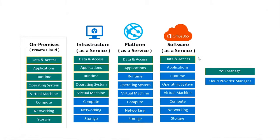What is Infrastructure as a Service, Platform as a Service, Software as a Service? With on-premises, you keep all your data, applications, VMs, and networking everything on-premises. With Infrastructure as a Service, storage, networking, and compute are provided by your cloud solution provider.